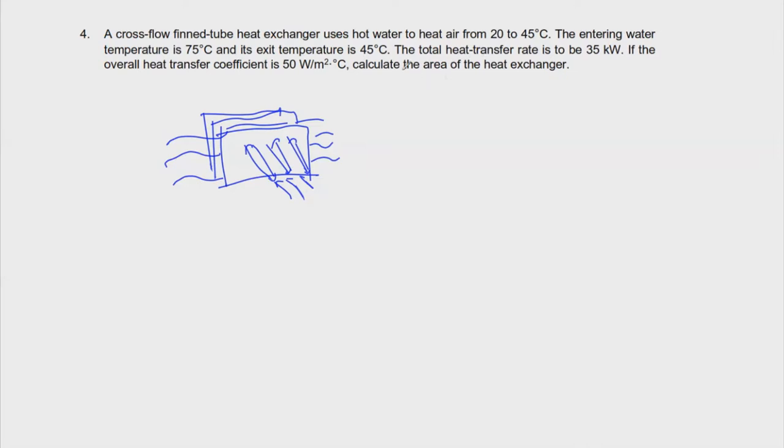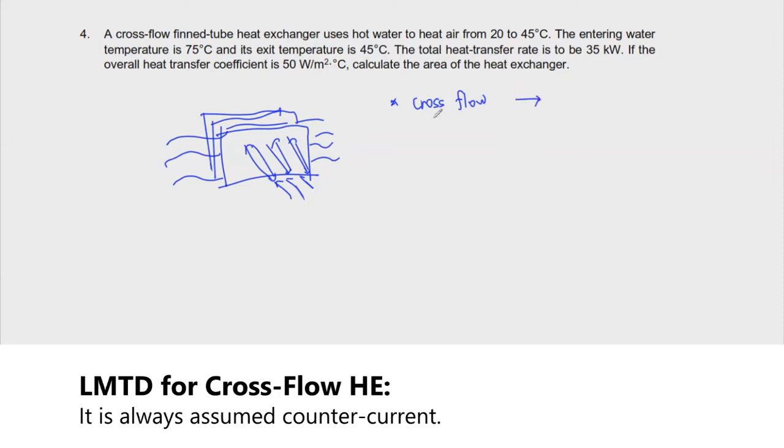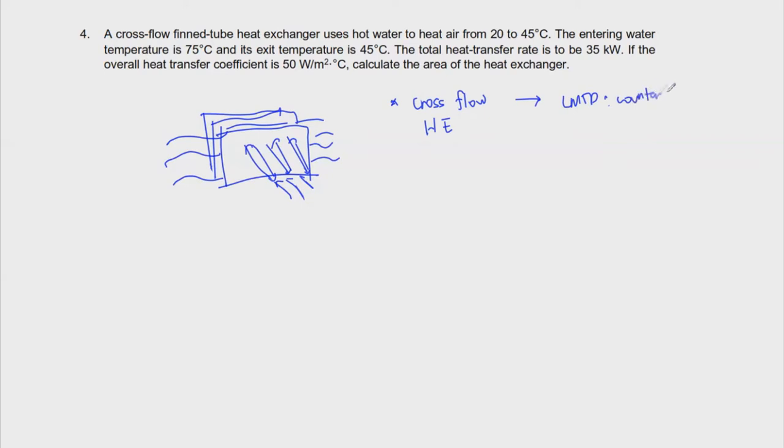Let's have the condition first. This is a cross-flow heat exchanger, and I would like to say that for cross-flow, automatic yung ating co-consider na LMTD is counter-current. Unlike the double pipe which can be parallel or counter-current, and shell and tube which depends on the figure, cross-flow LMTD is always counter-current. But of course, it also has this Ft which is the correction factor.